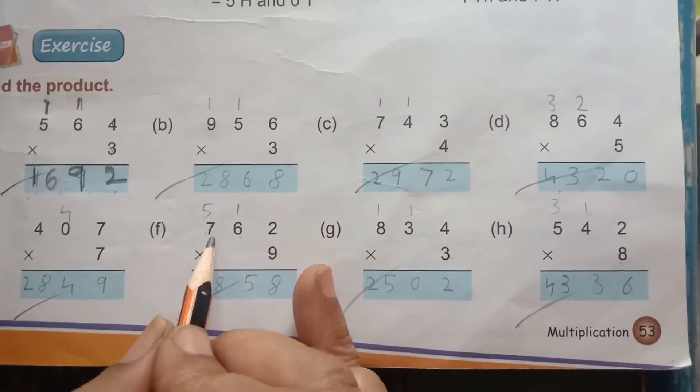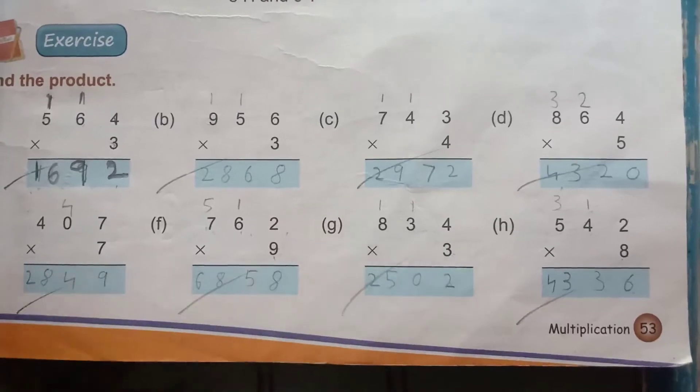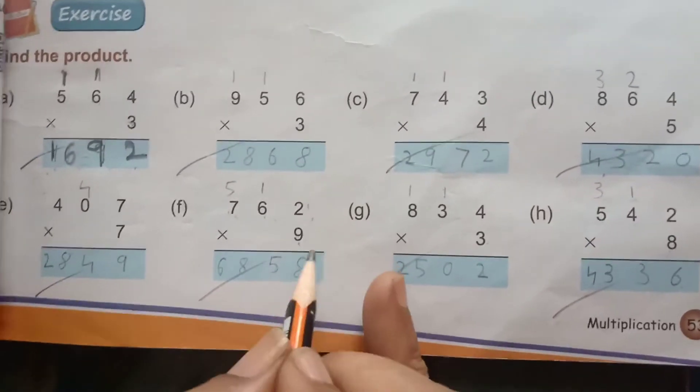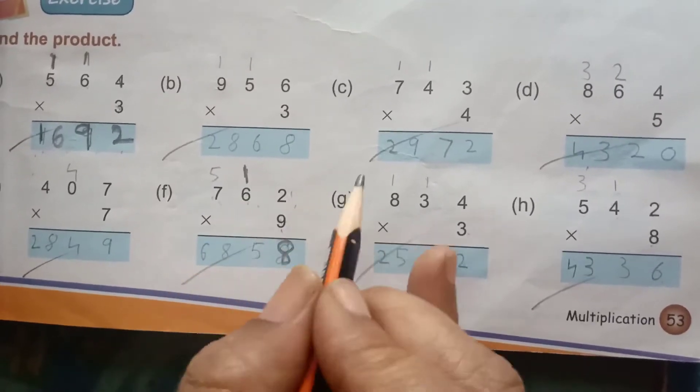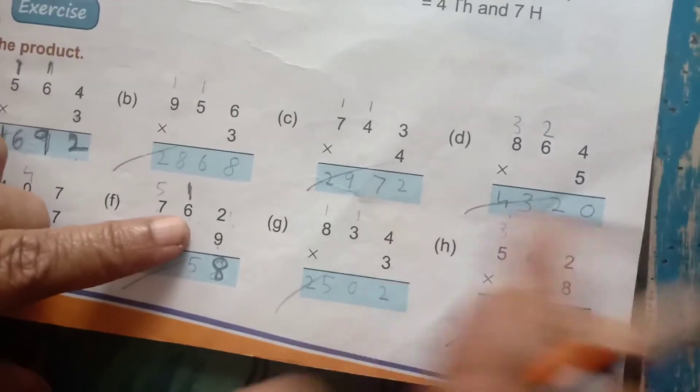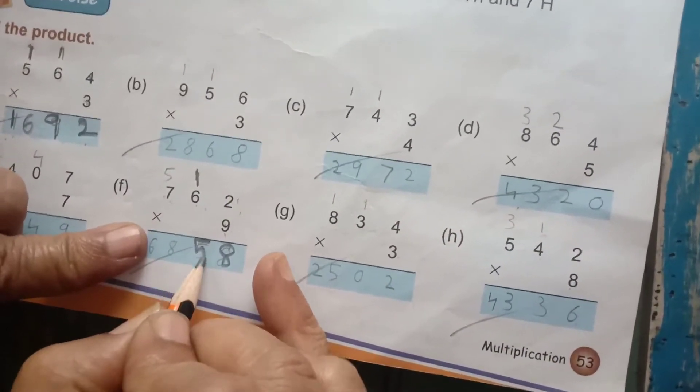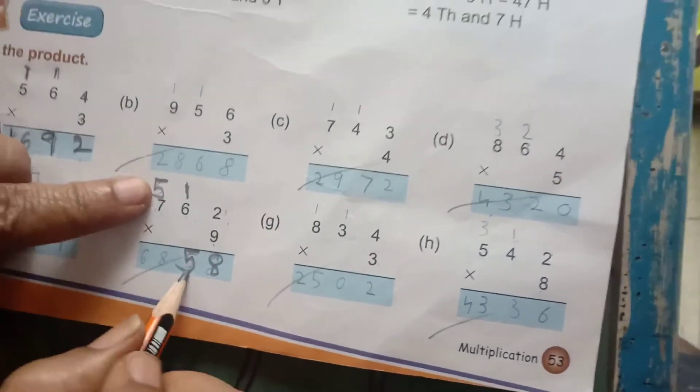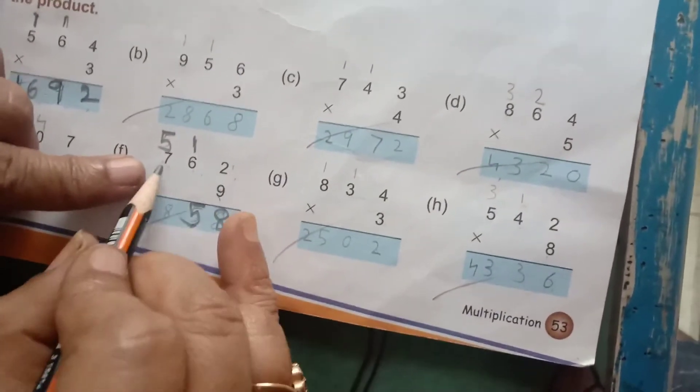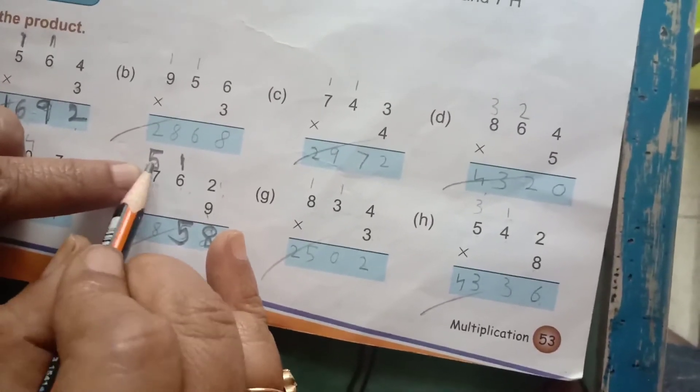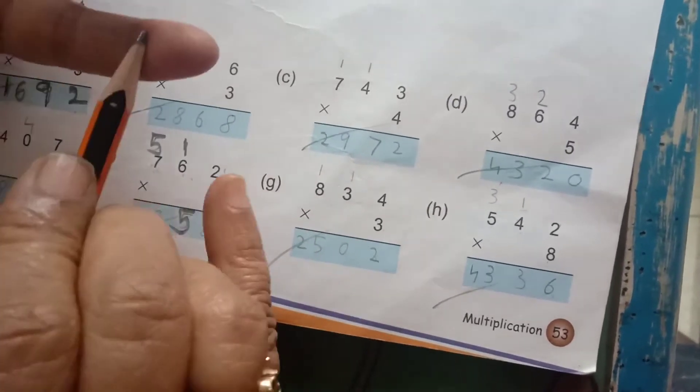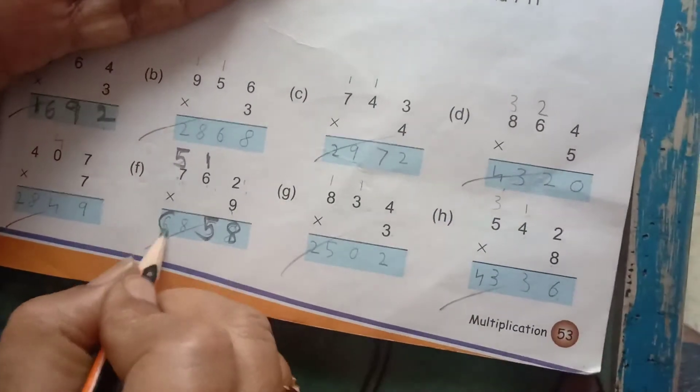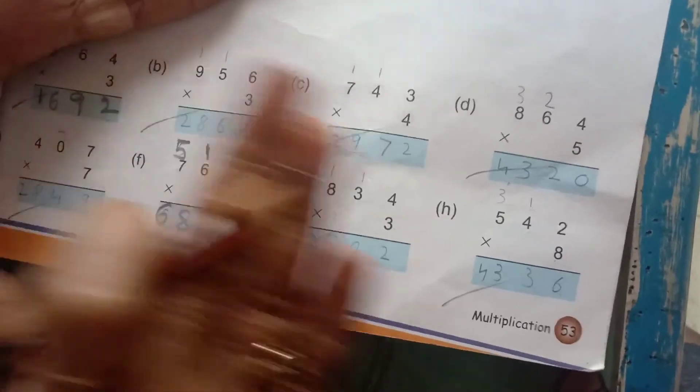Now, we will solve this. 762 into 9. 9 twos are 18, carry 1. 9 sixes are 54, 54 plus 1, 55. So 5 carry and 5 here. 9 sevens are 63, 63 plus 5: 63, 64, 65, 66, 67, 68. We have to solve it like this.